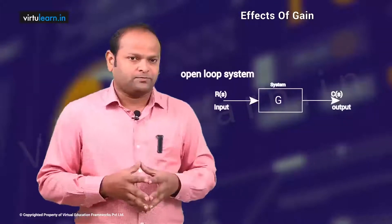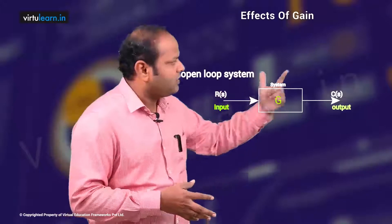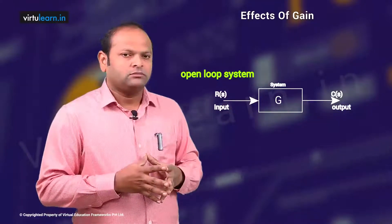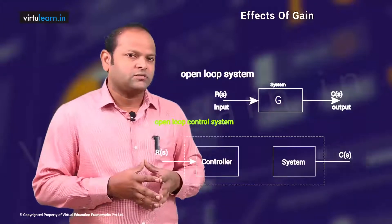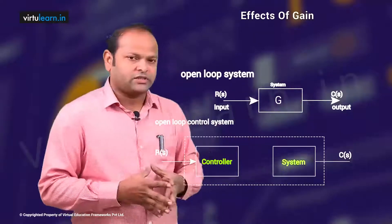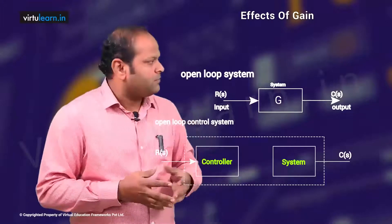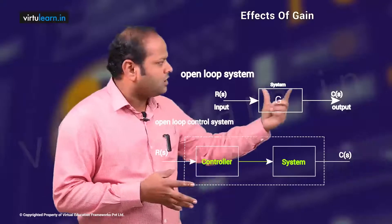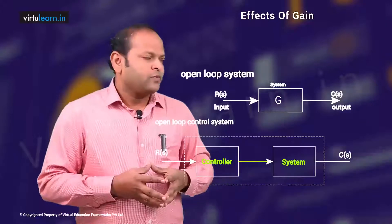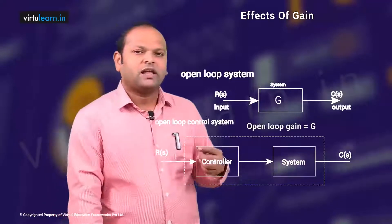Let us start with the effect of feedback on gain in a control system. The open loop block diagram has a block with gain G, an input connected, and an output. When I say open loop control system, the controller is also part of my system — this is the controller and after that we have the system. For analysis purposes we can combine these two blocks and make it a single block G, which is my open loop block. The transfer function of the open loop system is simply G, so the gain is G.